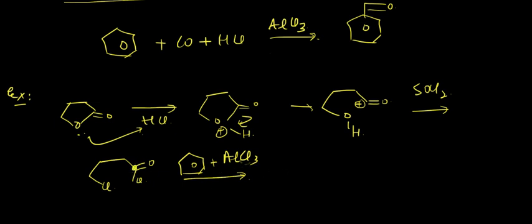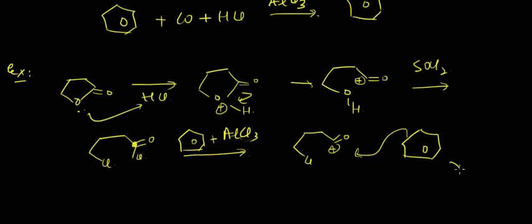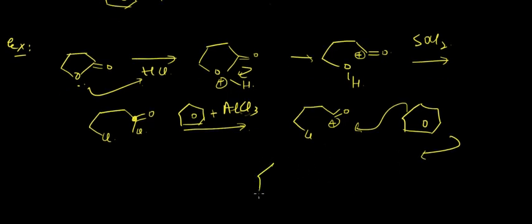We'll get a compound with a positive charge again. This positively charged carbon atom gets attacked by the benzene ring, which acts as a nucleophile, and as a result we get a product — counting carbons 1, 2, 3, 4 — with Cl attached.